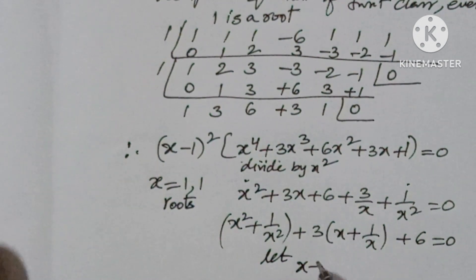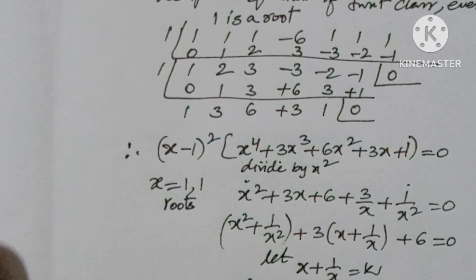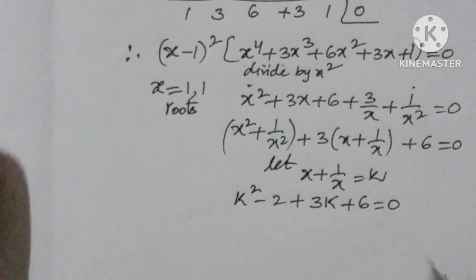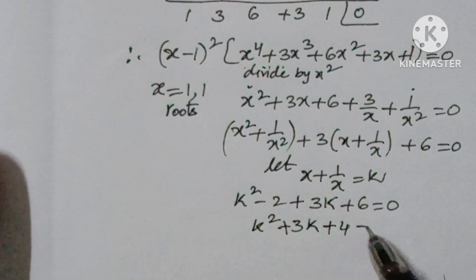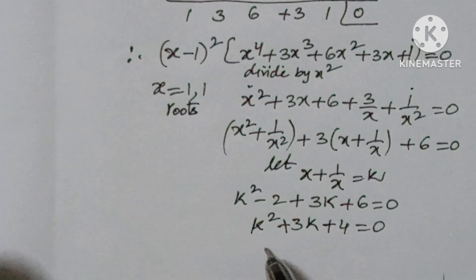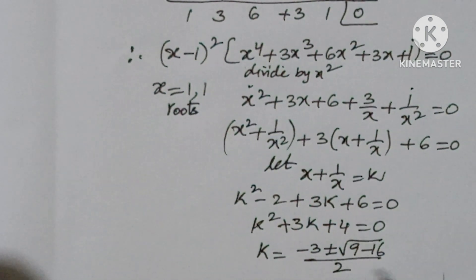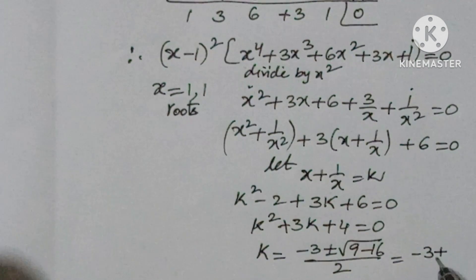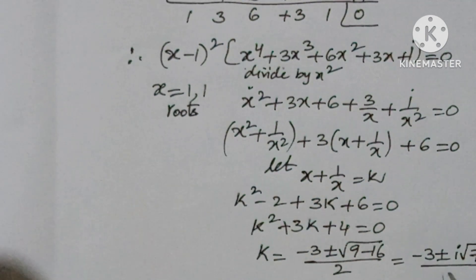Let x plus 1 by x equal k. Then k squared minus 2 plus 3k plus 6 equals 0. So k squared plus 3k plus 4 equals 0. Here you won't get factors. k equals minus 3 plus or minus square root of 9 minus 16 by 2, which is minus 3 plus or minus i root 7 by 2.